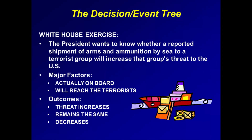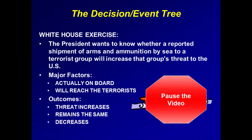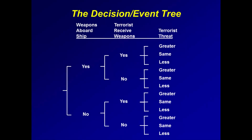Let's try another exercise. There are two major factors: whether the weapons are on board the ship, and whether the weapons will reach the terrorist. There are three outcomes — the threat from the terrorist will increase, remain the same, or decrease. Construct a decision event tree to represent this scenario. Pause the video to give yourself time to construct your decision event tree. Here is the decision event tree — the analytic roadmap that portrays the various scenarios for these factors and outcomes.